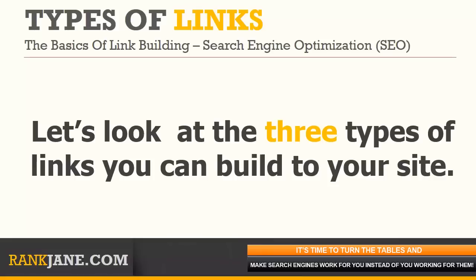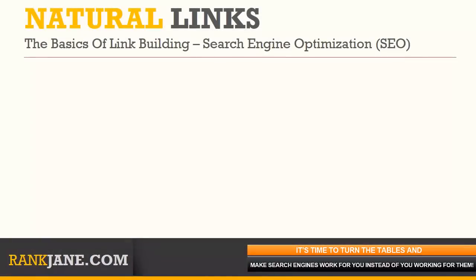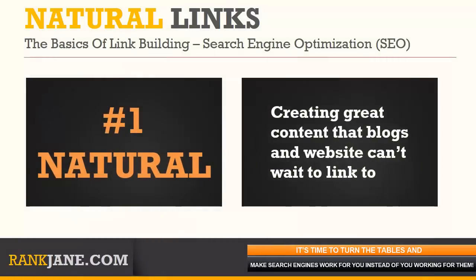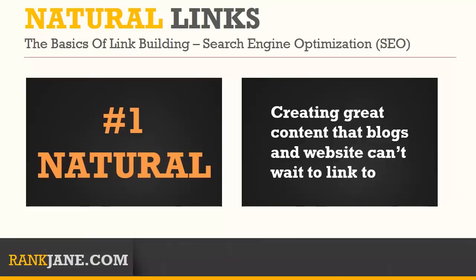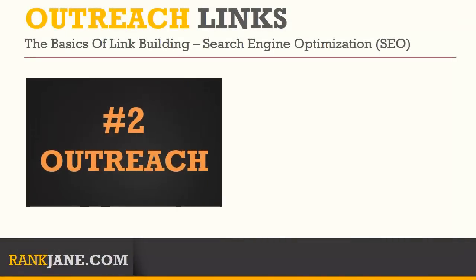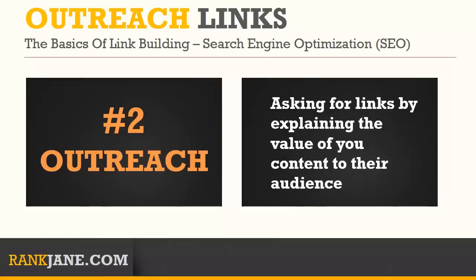Now let's look at types of links and how they differ. The first type, and probably the best if you can get it, is a natural link. This means you're putting out great content that other blogs and websites just can't wait to link to — you post something to your blog and without doing anything, people start linking to it. Natural links don't necessarily happen until you have a certain level of popularity, but they go a long way for search engine optimization.